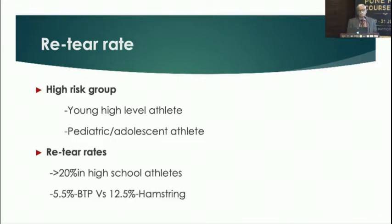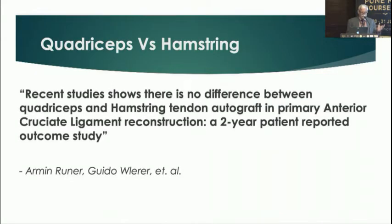Certain high-risk groups are more prone to re-tear: young high-level athletes, and pediatric and adolescent athletes. Studies show the re-tear rate is more than 20% in high school athletes. Comparing bone patellar tendon versus hamstrings, it is about 5% for bone patellar tendon and 12% for hamstrings — all important factors when choosing a graft.